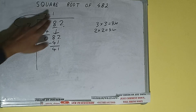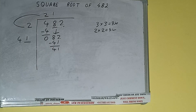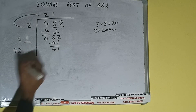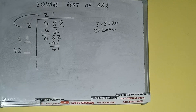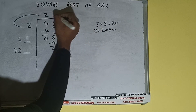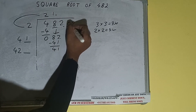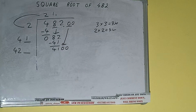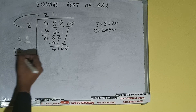41 into 1: add both, so 41 plus 1 will be 42. Write it here and keep a digit extra. We don't have more pairs, so we'll put a decimal. Once we put the decimal we can bring a pair of zeros down, and it will be 4100.